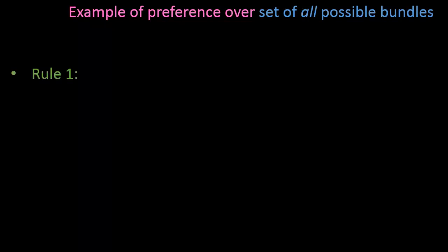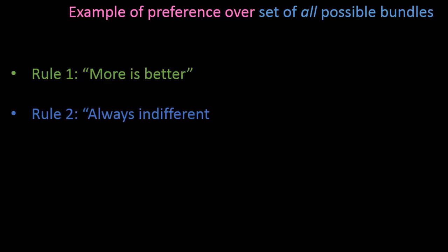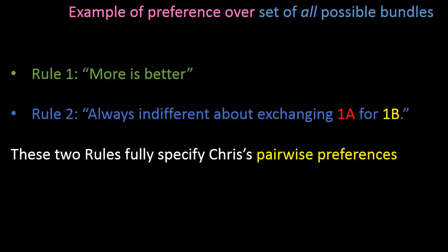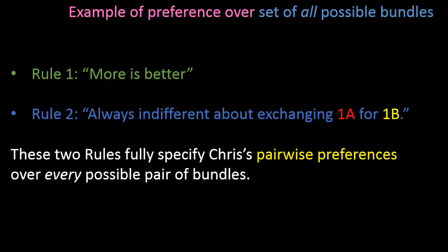Let's look at an example of a preference over the set of all possible bundles. To state this example, I'm going to have Chris follow two rules. The first rule: more is better. Whenever Chris has one more apple, he's strictly better off than before, and whenever he has one more banana, he's also strictly better off. The second rule: Chris is always indifferent about exchanging one apple for one banana. Whenever you take away one apple and give him one additional banana, he's exactly as happy as before, and similarly if you take away one banana and give him one apple. Using these two rules alone, we have fully specified Chris's pairwise preferences over all possible pairs of consumption bundles.